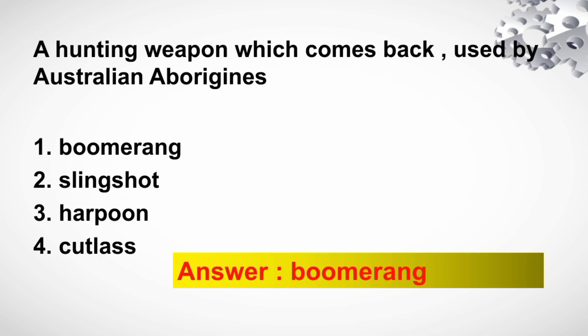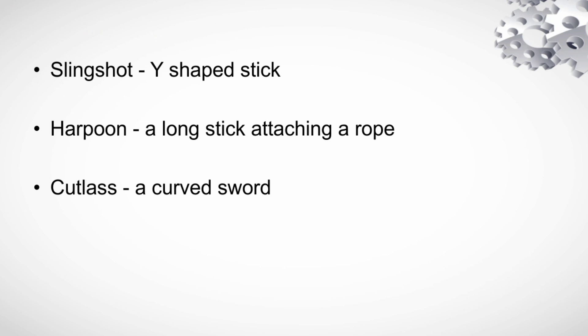This is a hunting weapon which comes back, used by Australian Aborigines — the hunting weapon is a boomerang. Slingshot is a Y-shaped stick. Harpoon is a long stick. Cutlass is a curved sword.